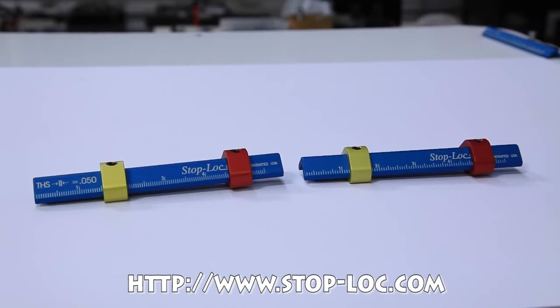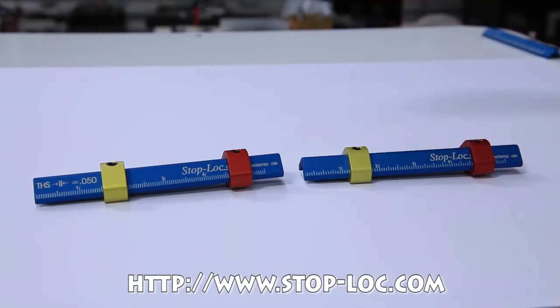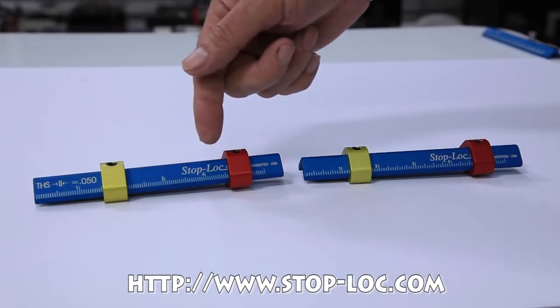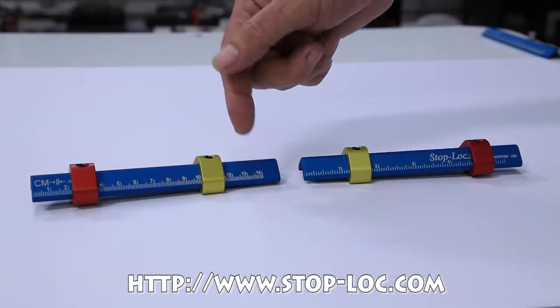Before we get started, I'd like to show you there are actually two models of the Stop-Loc. The less expensive one, shown here, has an inch ruler, and the deluxe model, shown here, has a thousandths ruler on one side and a metric ruler on the other side. They both work exactly the same.